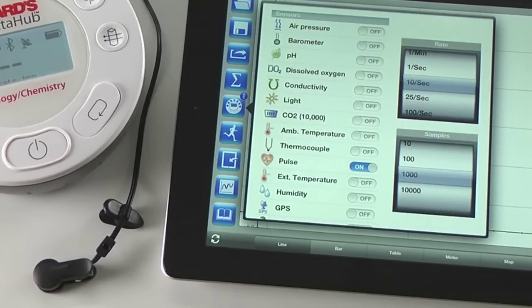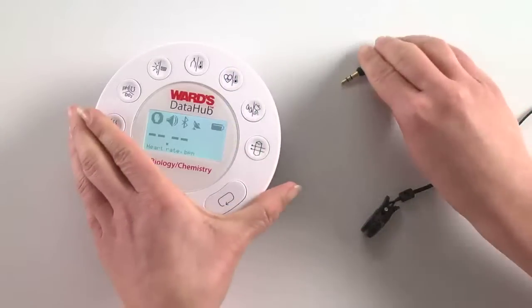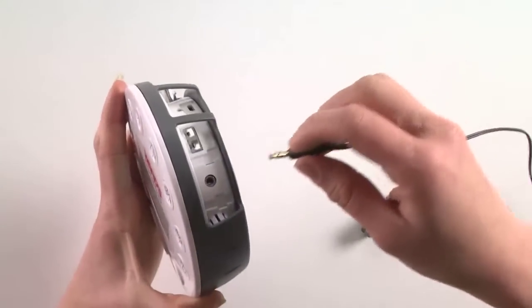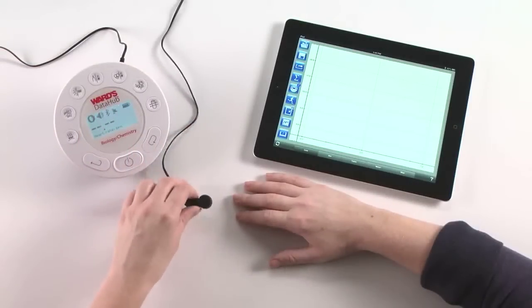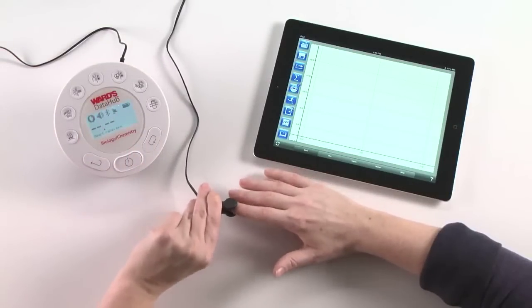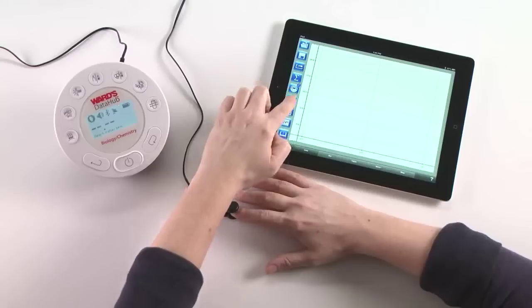With the heart rate sensor inserted into the DataHub and the heart rate clip placed on the student's finger, we're ready to begin recording data wirelessly.